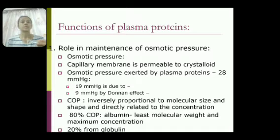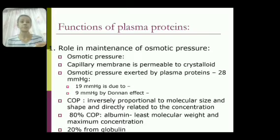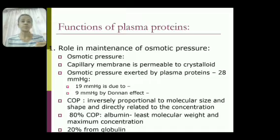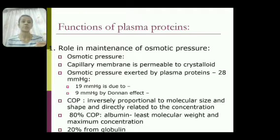Plasma proteins are also known as colloids, and the capillary membrane is permeable to crystalloids but impermeable to colloids. The osmotic pressure exerted by colloids is known as colloid osmotic pressure. The total colloid osmotic pressure is about 28 mmHg, of which 19 mmHg is due to plasma proteins and 9 mmHg is due to the Donnan effect.